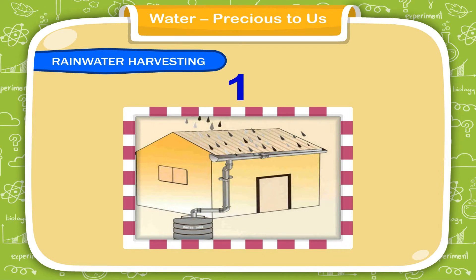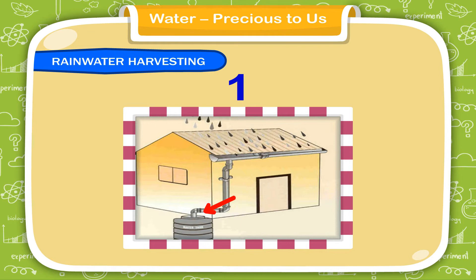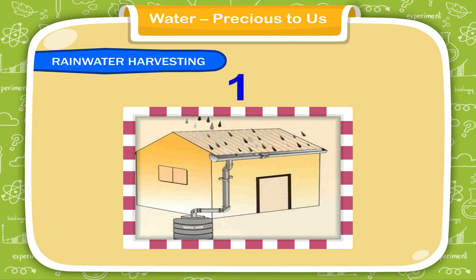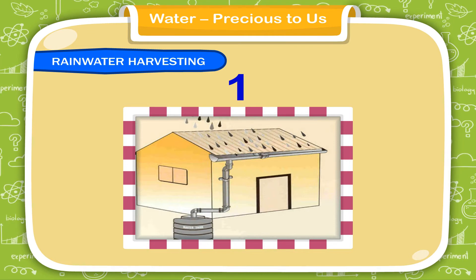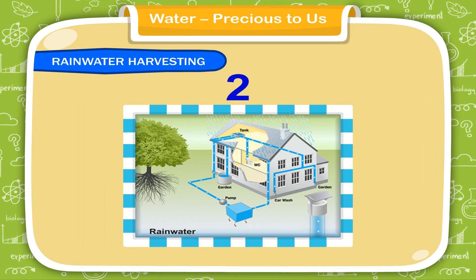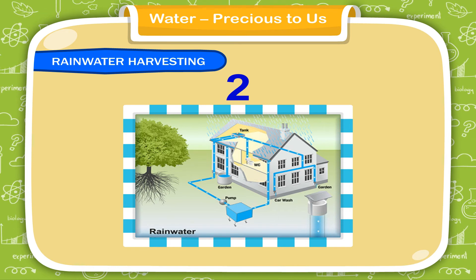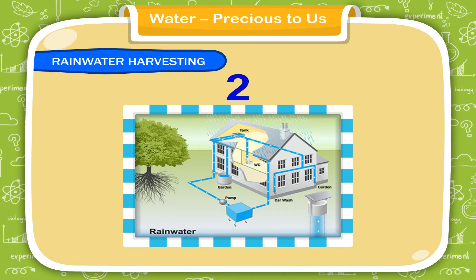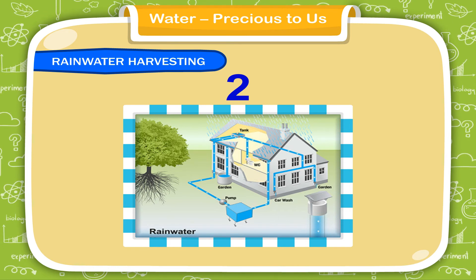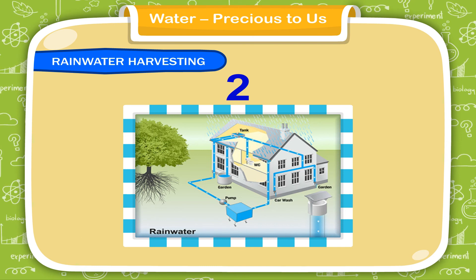Technique one — rooftop harvesting: rainwater is collected in tanks from the rooftop. This might contain impurities which have to be filtered before use. Technique two — rainwater can be sent directly into the ground through pipes. This replenishes the groundwater, thereby maintaining the level of groundwater.